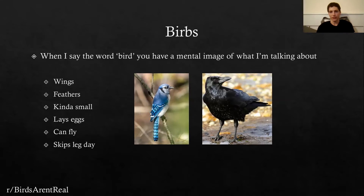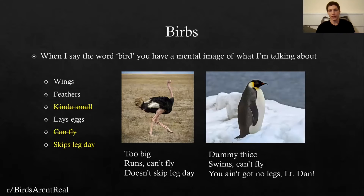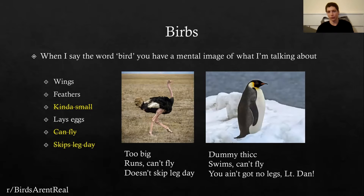Examples of these kinds of birds that you think of pretty automatically are things like blue jays or ravens. There are some other kinds of birds that don't exactly meet these criteria but you still identify them as birds. For example, ostriches, which are too big — they don't meet the 'small' criteria, and they run rather than fly. This ostrich clearly does not skip leg day; it's got very beefy legs.